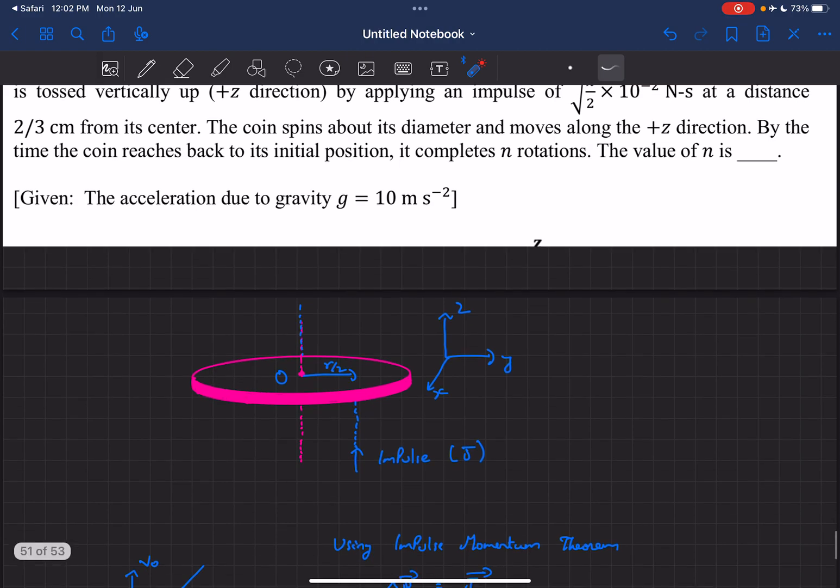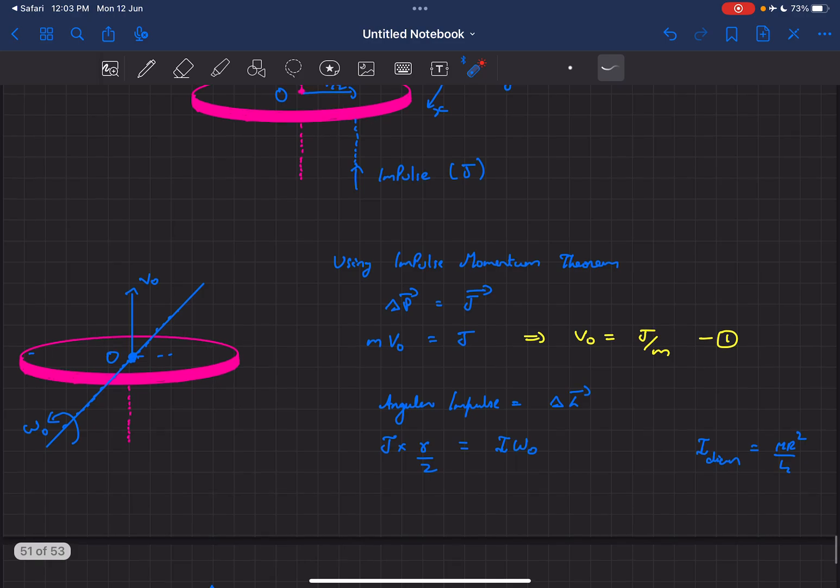Moving on to the solution, we'll be using the fact that the impulse provided to an object would be equal to the change in momentum produced.